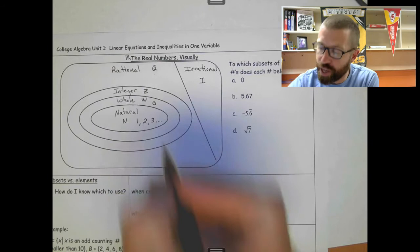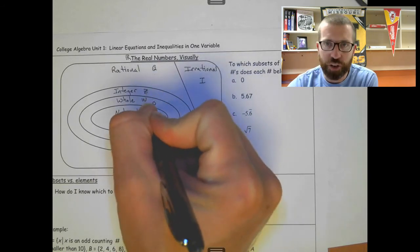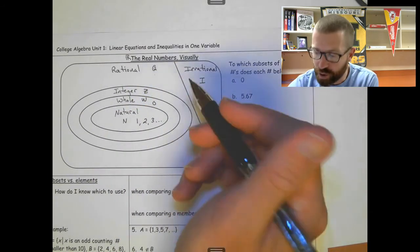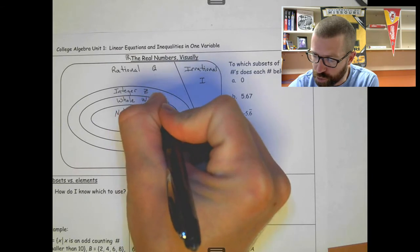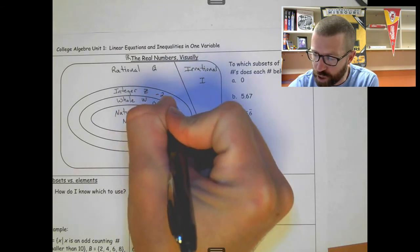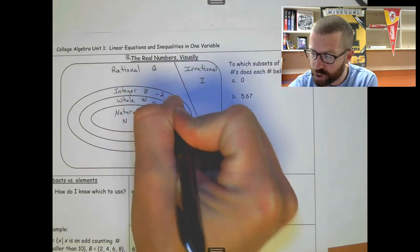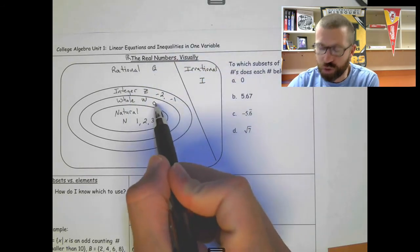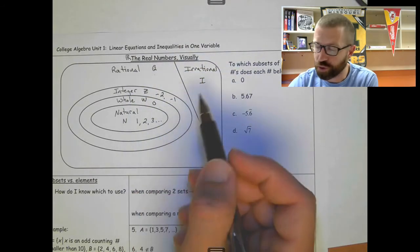Integers, they include the whole numbers, the natural numbers, but also negative numbers. So we'll put just negative 2, negative 1, and also 0, 1, 2, 3. Still no decimals.